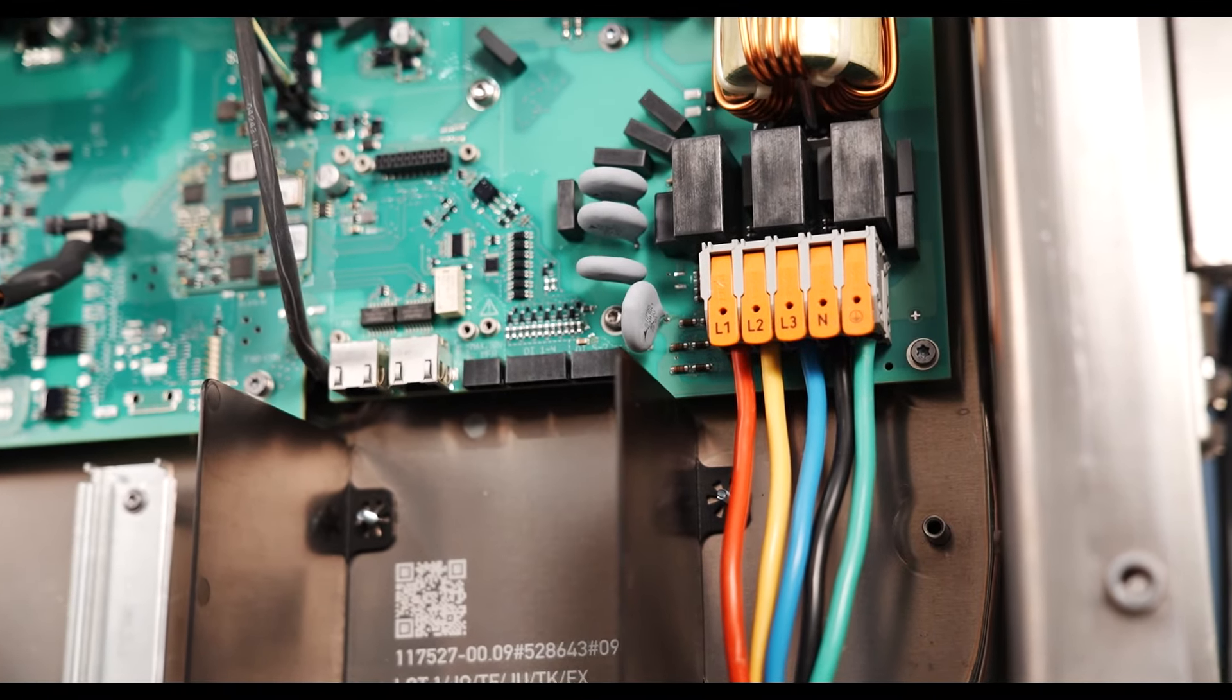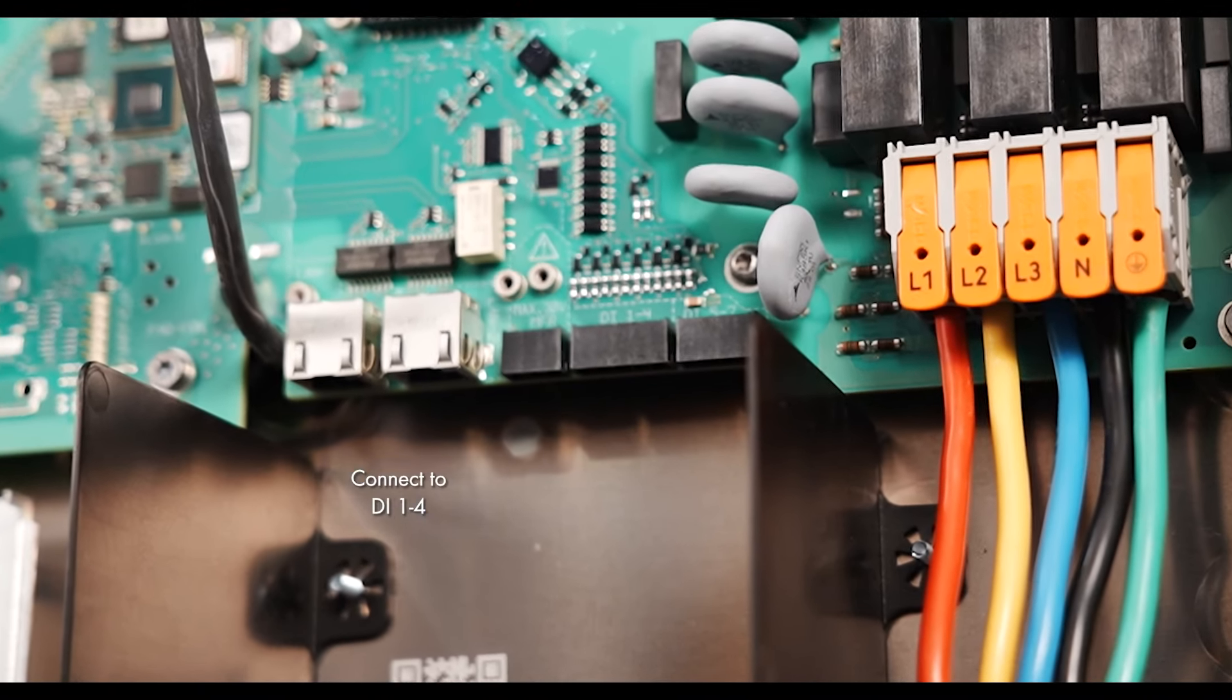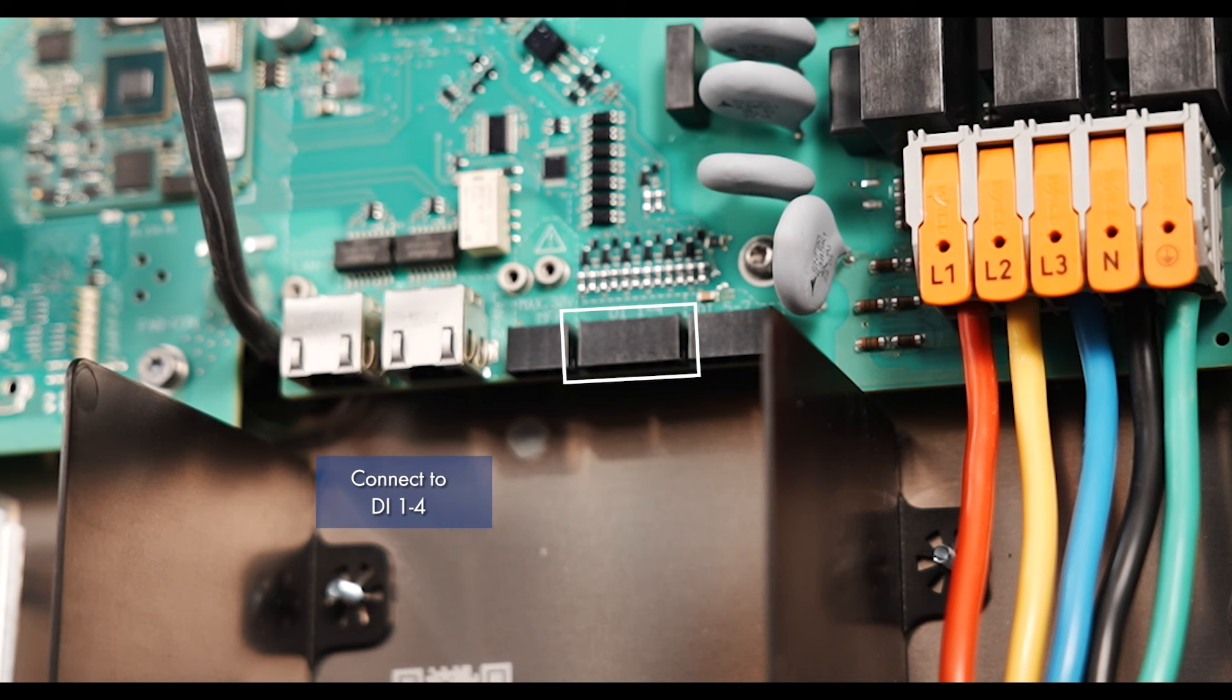A ripple control receiver or remote terminal unit can be connected to digital input DI-124. In a multi-inverter system, the ripple control receiver must be connected to digital input DI-124 of the system manager. You can connect a fast stop switch at digital input 5 and an external grid and PV system protection device at digital input 6.